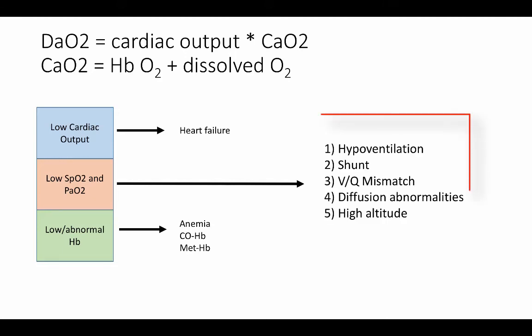There's five basic causes of low oxygen content: hypoventilation, shunt, VQ mismatch, diffusion abnormalities, and high altitude. High altitude is generally not a diagnostic dilemma. You basically know when you're at a certain altitude. So I'm going to focus my discussion on the first four.